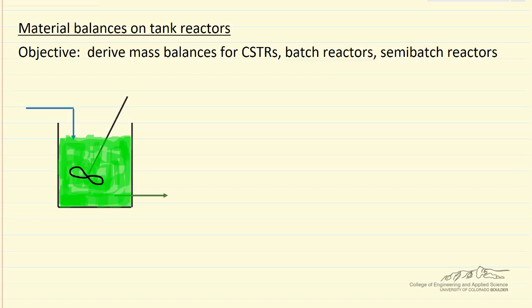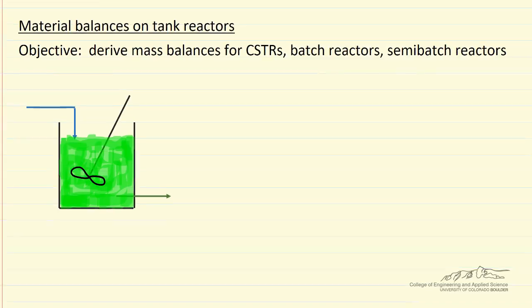Here we're going to derive mass balances for continuous stirred tank reactors, including at steady state CSTRs, batch reactors, and semi-batch reactors. The important thing is that we're doing balances on individual components as opposed to an overall balance. So let's look at the notation and write down the balances.